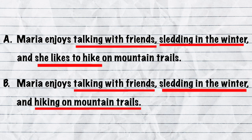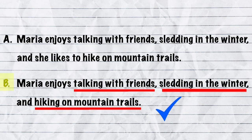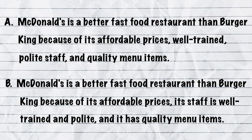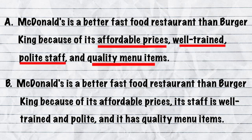Notice what makes each of the points parallel. Read the thesis statement with only one point at a time, and you can see which points are not structured the same. Let's try again. Choose which thesis statement is correctly structured. A: McDonald's is a better fast food restaurant than Burger King because of its affordable prices, well-trained, polite staff, and quality menu items. B: McDonald's is a better fast food restaurant than Burger King because of its affordable prices, its staff is well-trained and polite, and it has quality menu items.